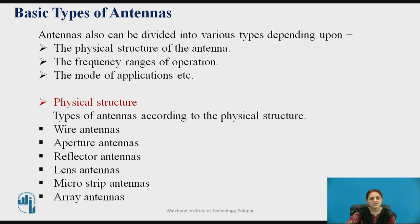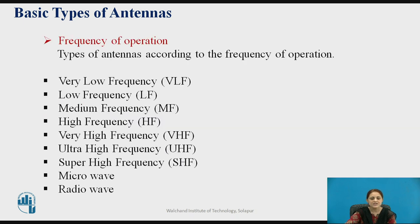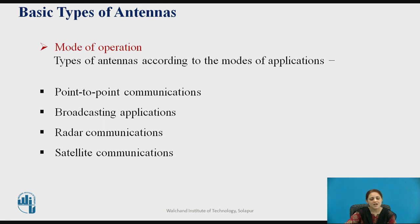Based on physical structure, antenna types include wire antennas, aperture antennas, reflector antennas, lens, microstrip, and array antennas. Based on frequency, they span ranges such as very low frequency, low frequency, medium frequency, high frequency, very high frequency, ultra high frequency, super high frequency, microwave, and radio waves. Based on mode of operation, types include point-to-point communication, broadcasting applications, radar communication, and satellite communication.